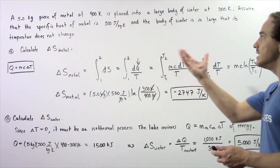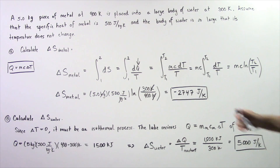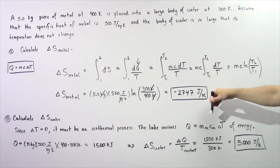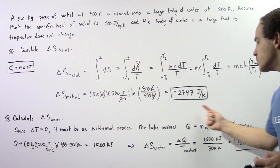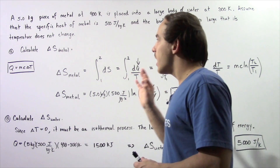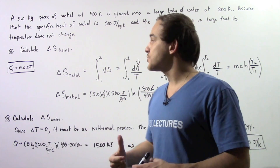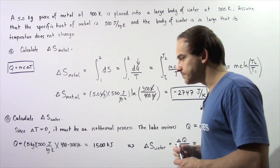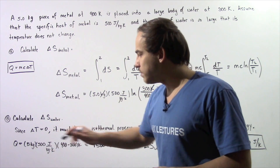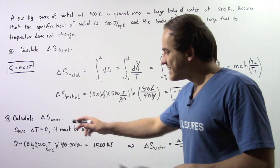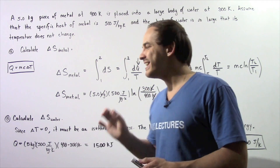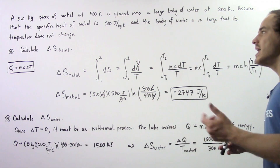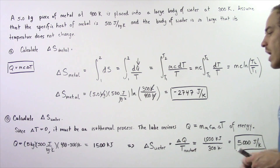The lake receives the energy that the metal loses. The energy gained by the water equals the mass of the metal multiplied by the specific heat of the metal, multiplied by the change in temperature of the metal. So: 5 kilograms times 500 times 600 Kelvins gives us 1,500,000 joules — or 1500 kilojoules — of energy gained by the large body of water.